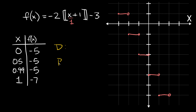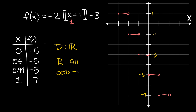Domain is all real numbers. For the range, the steps skip every other whole number — we hit -7, -5, -3, -1, 1, 3, 5, 7, and so on. All of these are odd numbers, so the range is all odd integers.